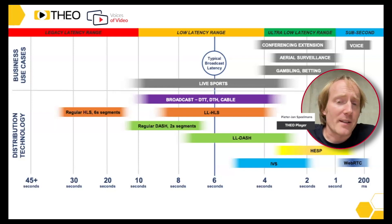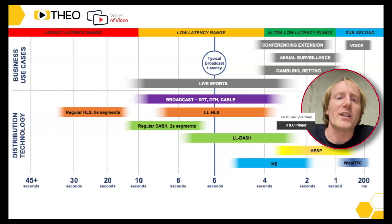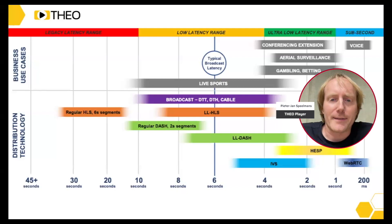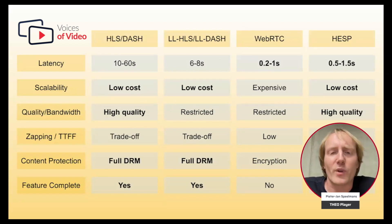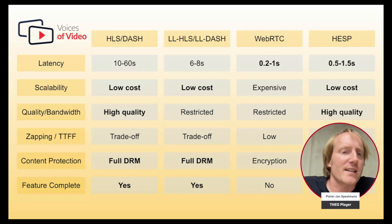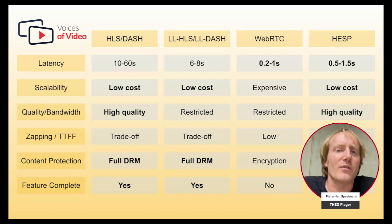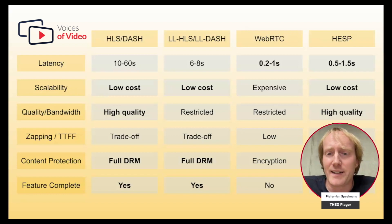That's what we wanted to do with HESP as well — really make that sub-second latency range possible. And the other thing that's relevant, because it really kicks in when you start looking at which protocol should I use: it's not just about latency — at least that's my opinion. It's about how much does it really cost to get this out to the audience you want to serve? How is the picture quality? Are there trade-offs that you need to take?